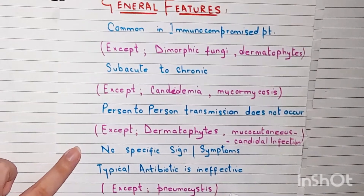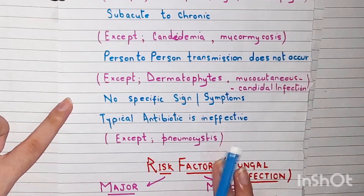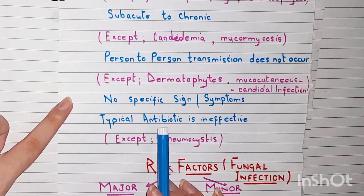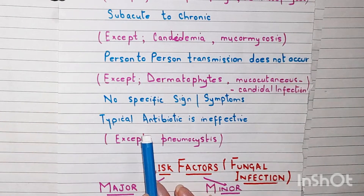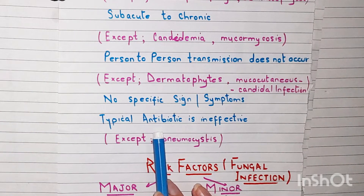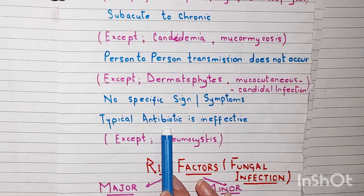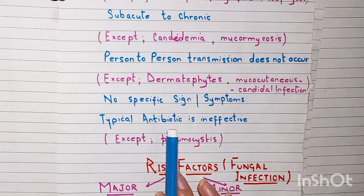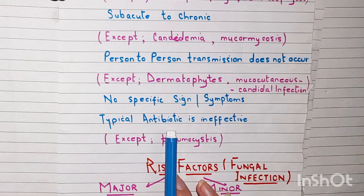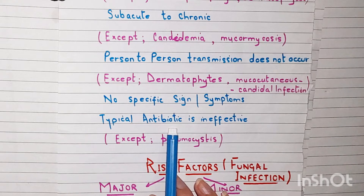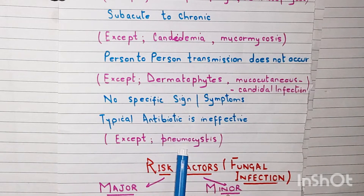Fifth, typical antibiotics are ineffective against fungal infections. Antibiotics are resistant to fungal infection, and similarly, antifungals are resistant to bacterial infection — antibiotics are only effective against bacteria, otherwise they are ineffective.